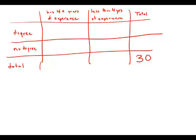So I'll start filling in this table. We have 30 in the job total. We have 14 who have at least 4 years of experience, so that's everyone with 4 years of experience whether they have a degree or not. And so that means there must be 16 people without 4 years of experience.